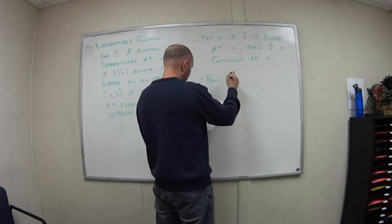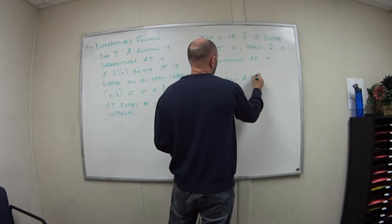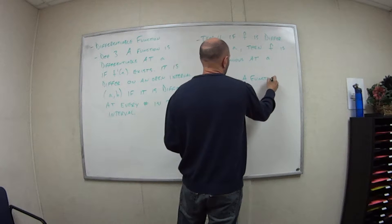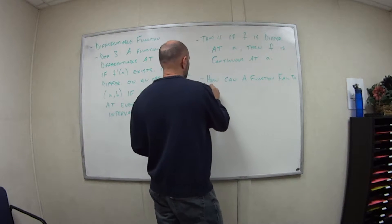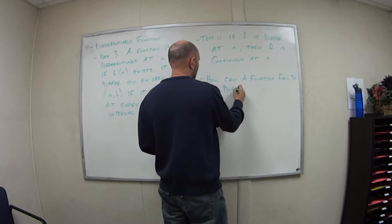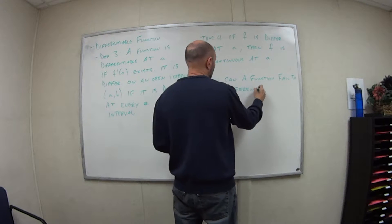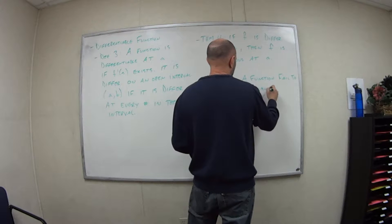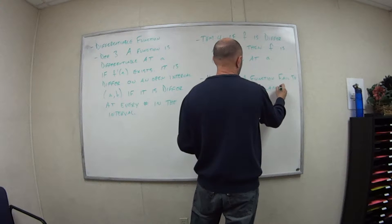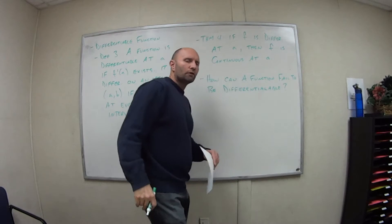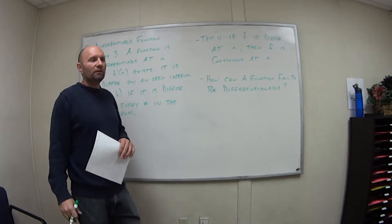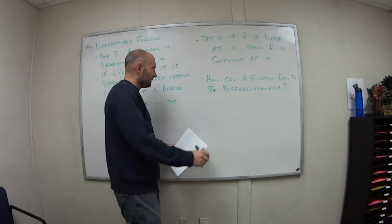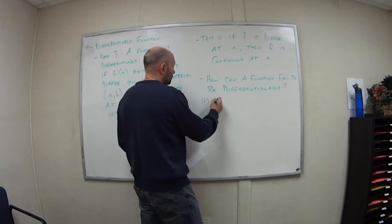So how can a function fail to be differentiable? Think about what the derivative is telling us. In the most basic form, it's the slope of the tangent line, right? So the first is if we have corners.